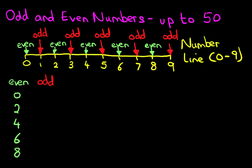Right, so the odd numbers are 1, 3, 5, 7, 9. So those are all the odd and even numbers going from 0 to 9.